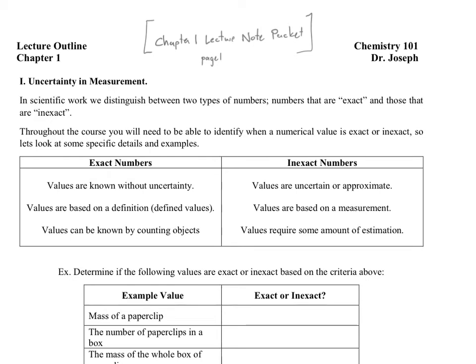Let's look at the characteristics of exact numbers versus inexact numbers. Exact numbers are numbers that have values known without any uncertainty — they are certainly known, definitely one number and not any other. Examples include integer digits like 1, 2, 3, 4, and so on. There's no uncertainty that the number 1 is sometimes more or less than 1 — it's always exactly 1. Inexact numbers, of course, have values that are not defined as a specific number and have some uncertainty in them.